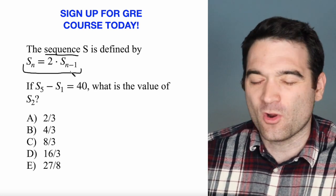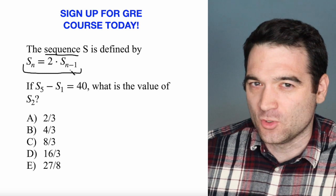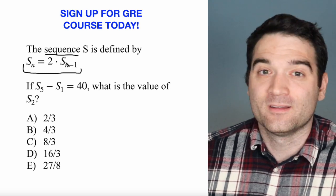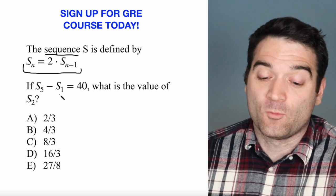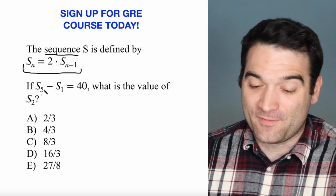S sub n minus 1, you can always just kind of immediately translate to the previous number times 2. So we're told if S sub 5 minus S sub 1 is equal to 40, what's the value of S sub 2?